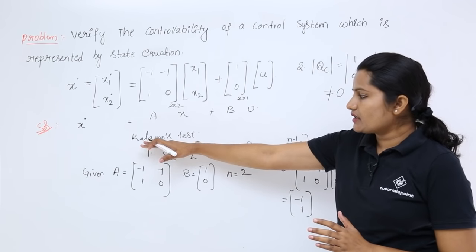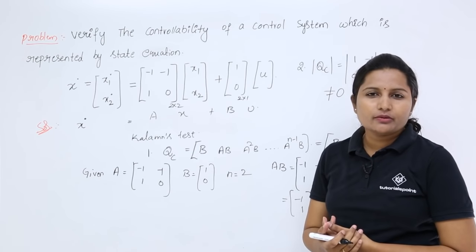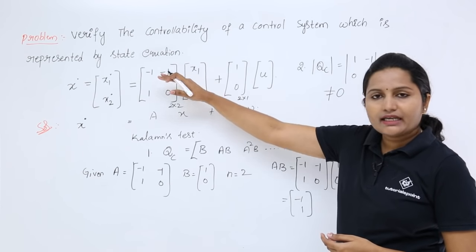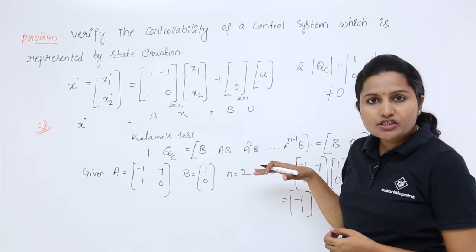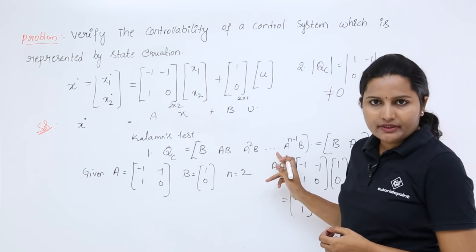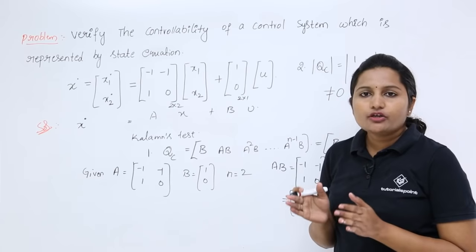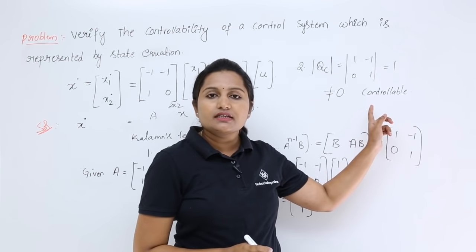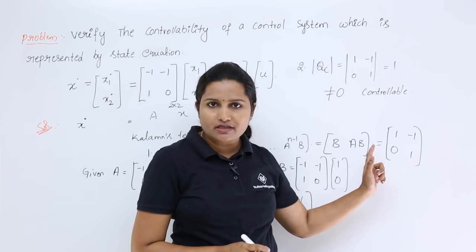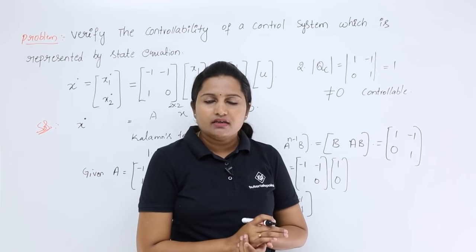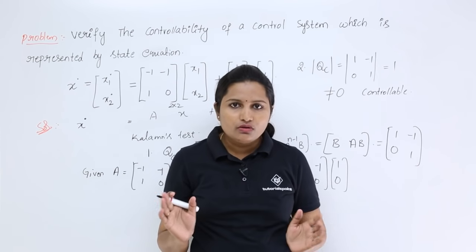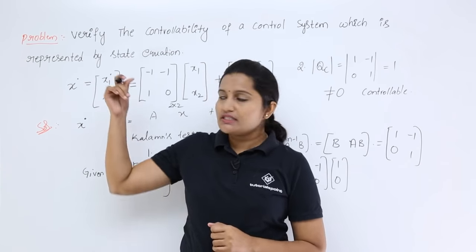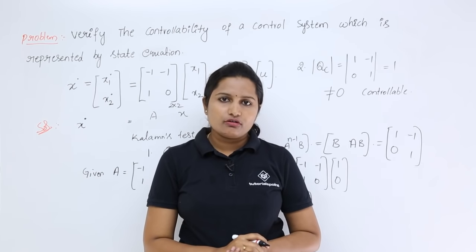In general, we use the controllability test to determine the controllability of a system. First, we form the matrix QC from the given state equation — the number of terms depends on the order N. Then we find the determinant of QC. If the determinant is not equal to 0, the system is controllable; otherwise, it is not. For this example, the given control system is a purely controllable system.